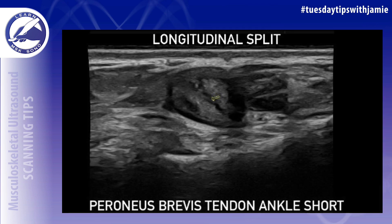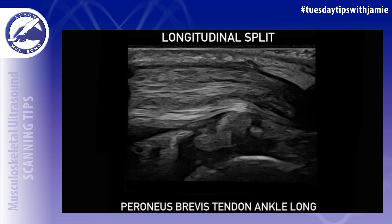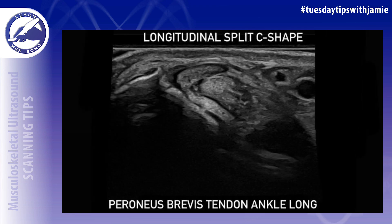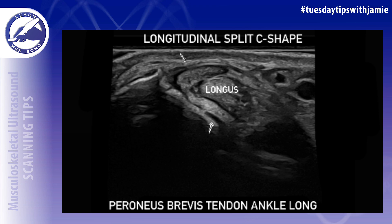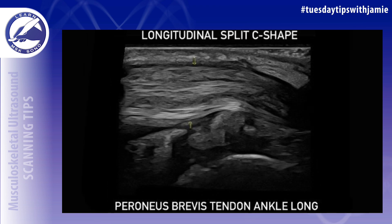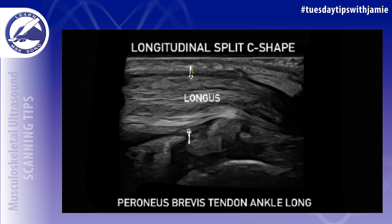The next example is of the peroneus brevis tendon in the lateral ankle. The first example shows a standard longitudinal split, but another thing that can happen with this tendon is that it can actually form a C shape around the adjacent peroneus longus tendon in the short axis. As you can see with the arrows, the brevis is forming a C shape around the longus. And in the long axis image, you actually see the brevis tendon surrounded by the longus tendon on the outside.